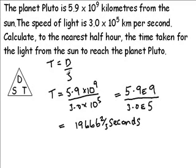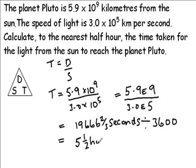We are however asked in the question to calculate to the nearest half hour the time taken. So we need to convert seconds into hours and to do that we divide by 3,600 because there are 3,600 seconds in an hour. And if we carry that calculation out we get 5.5 hours to the nearest half hour.